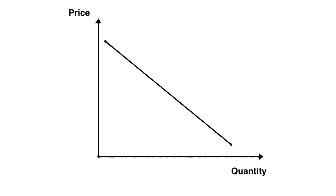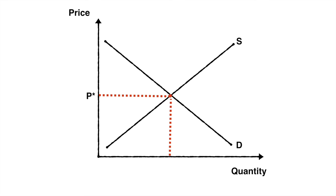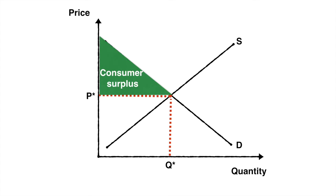The graph we are familiar with already is a market equilibrium model. At a price of P star, customers have purchased a quantity of Q star. The total additional benefit enjoyed by consumers is the entire area above the price paid but below the demand curve. If you're unclear about the idea of consumer surplus, check out my earlier video in this unit — I'll include the link in the video notes.